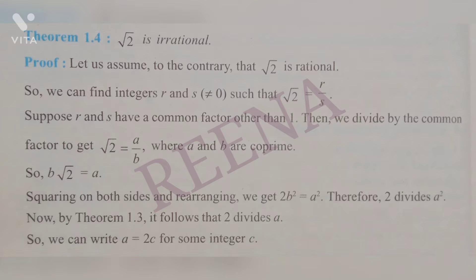Now we will take the question and prove that √2 is irrational, using what we have learned as an ingredient. We use the contradictory method — we take the given statement as false and then prove by contradiction. So we assume the contrary: that √2 is rational.